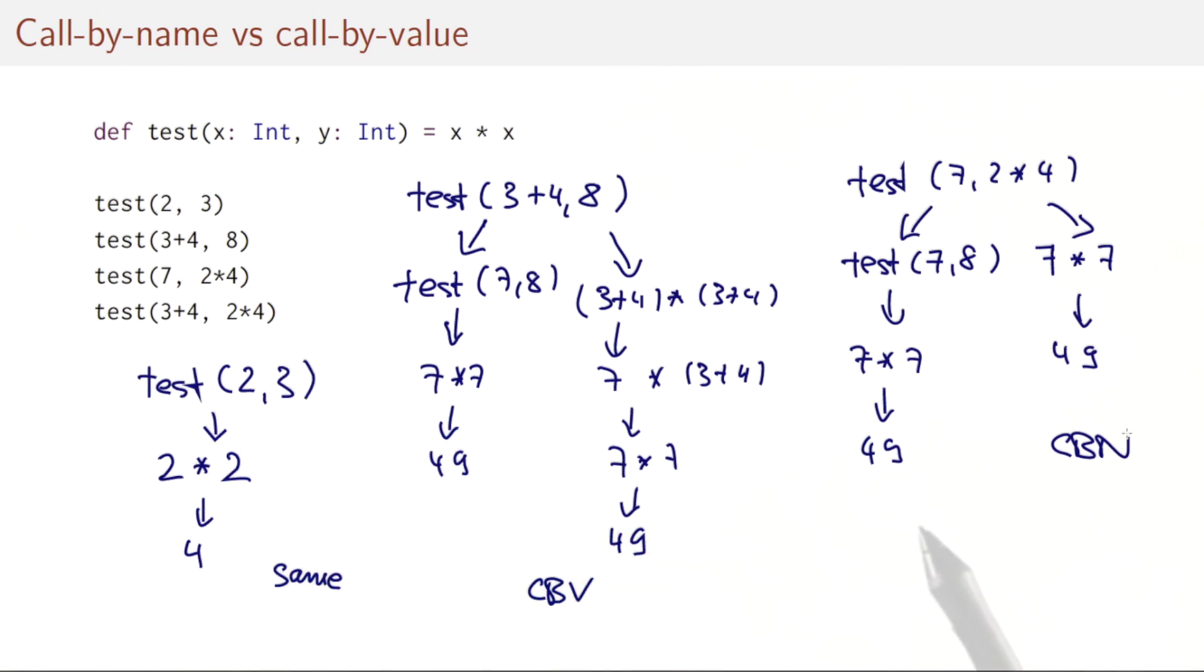The fourth example, test three plus four, two times four, combines the evaluations of the second and third example. So it comes as no surprise that it's again a draw, that call by value and call by name reduce in the same number of steps.